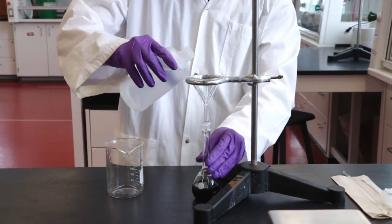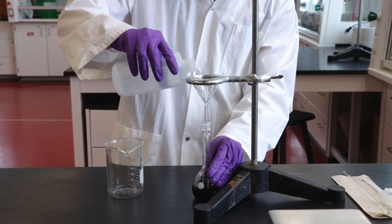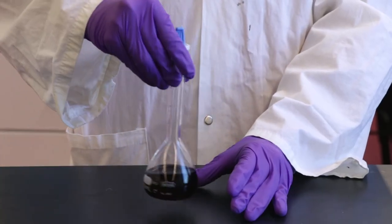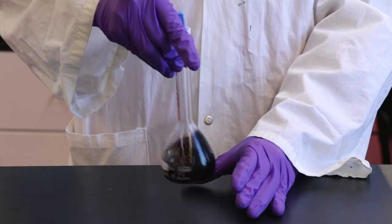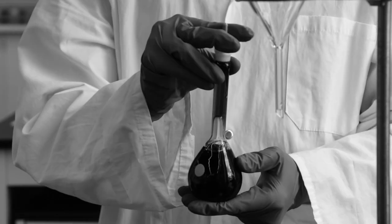Add additional distilled water from the wash bottle to fill roughly 50% of the flask's capacity. Stopper and swirl the flask to dissolve the solid. Do not invert the flask while there is still solid present.